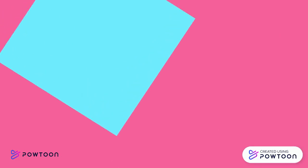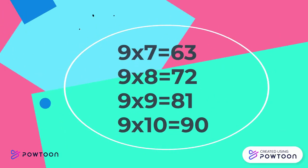9 times 7 is 63. 9 times 8 is 72. 9 times 9 is 81. 9 times 10 is 90.